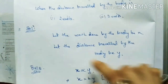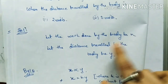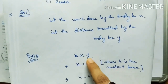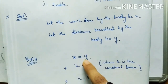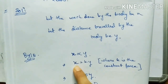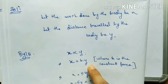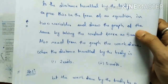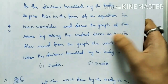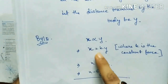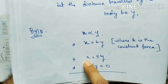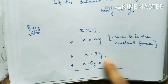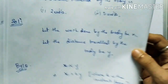Let the work done by the body be x and the distance traveled be y. Since work done is proportional to distance: x is proportional to y, so x equals ky, where k is the constant force. Given k equals 5, we get x equals 5y, or x minus 5y equals 0. This is the linear equation in two variables.